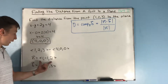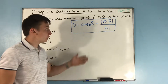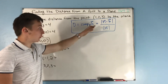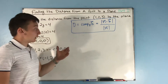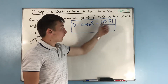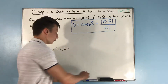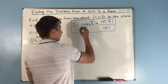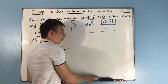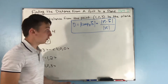Now that we have vector n and vector b, we're going to use the component of b onto n to find the distance. That is going to be the absolute value of vector n dot b, over the magnitude of n.